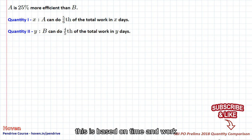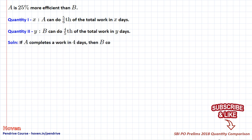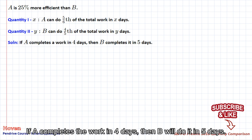This is based on time and work. A is 25% more efficient. If A completes the work in 4 days, then B will do it in 5 days.